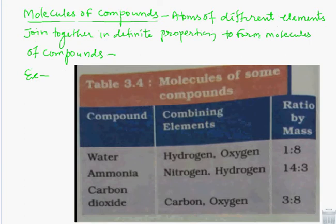The next is molecules of compound. A compound has different atoms. Atoms of different elements join together to form a molecule of compound. The example we have given you is water. Water has the formula H2O. We can easily tell its combining elements names: H is hydrogen and O is oxygen. Same ammonia, its formula is NH3. N for nitrogen, H for hydrogen, and the ratio by mass is 14 is to 3. Same carbon dioxide, it is CO2, carbon and oxygen, and the ratio by mass is 3 is to 8.